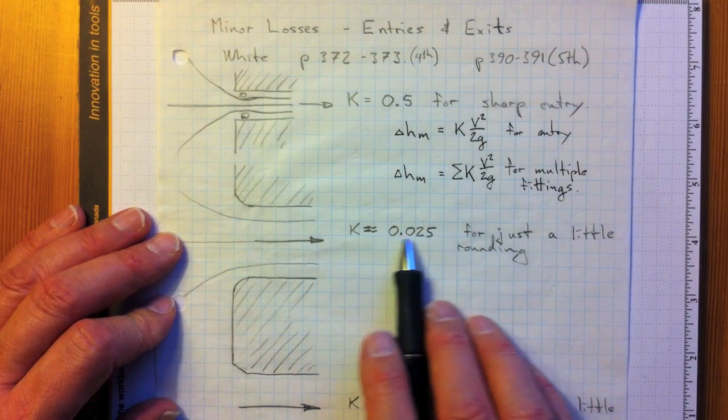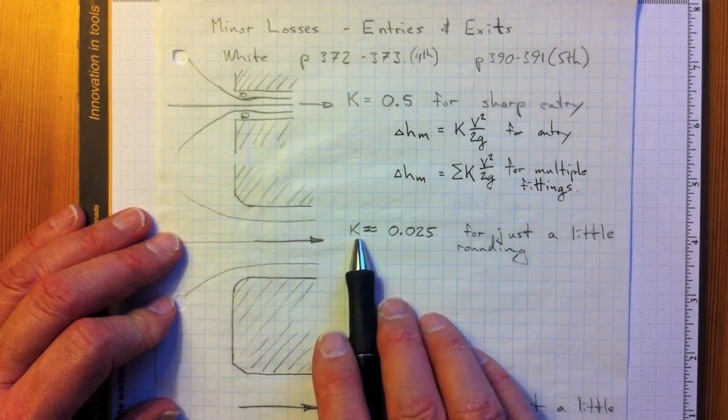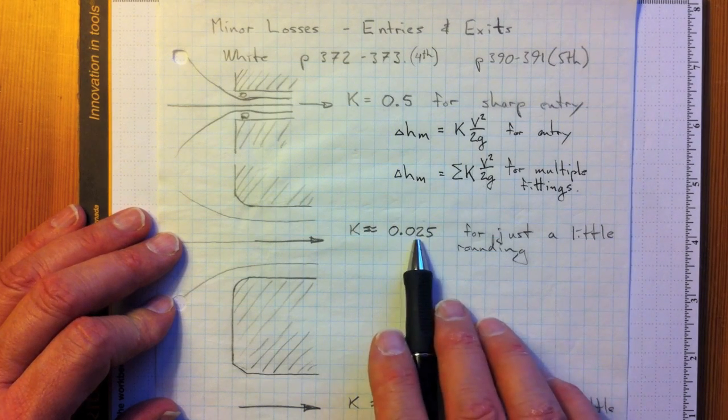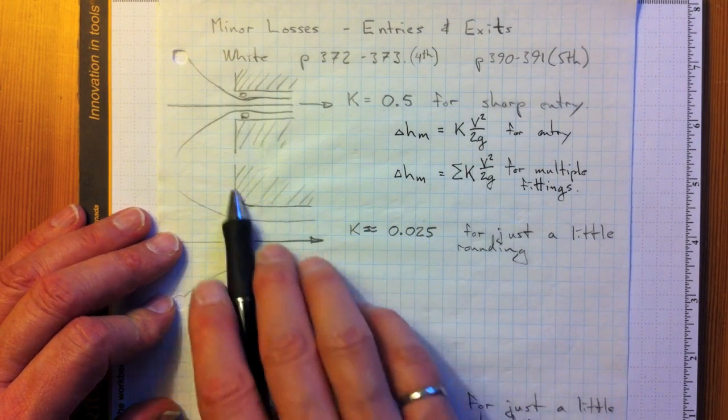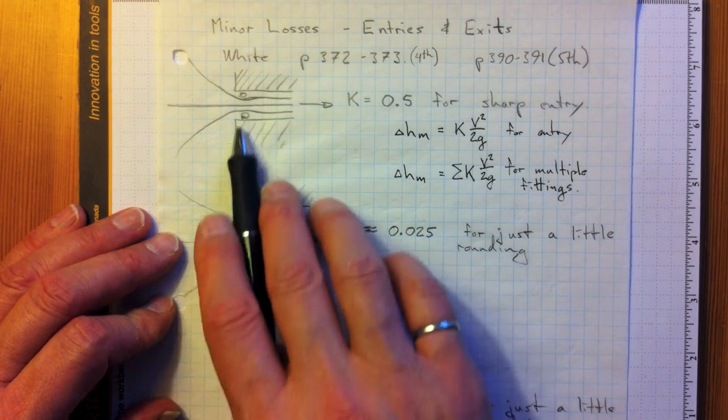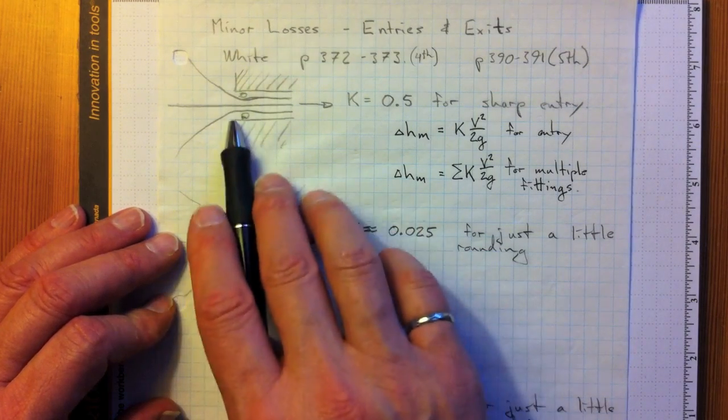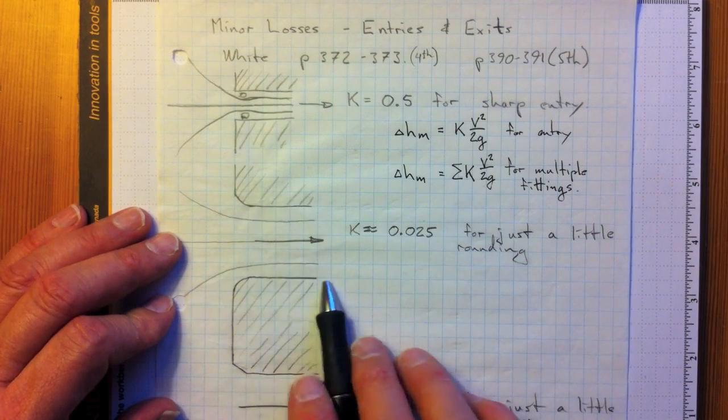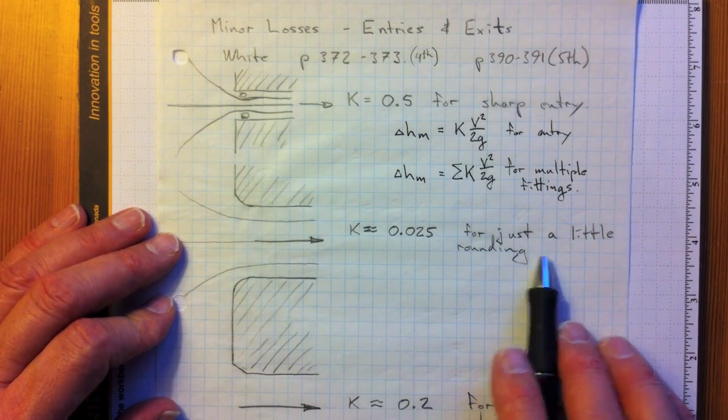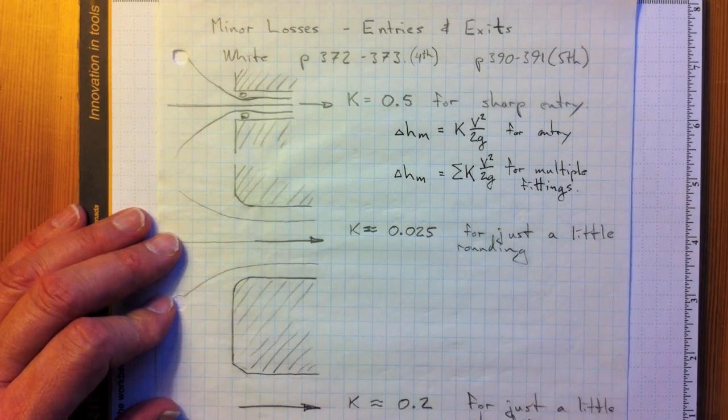Now it's amazing how much we can reduce that minor loss coefficient, get it down from about 0.5 down to about 0.025 just by putting a little bit of rounding on that entry, just by smoothing off that sharp edge just a little bit. We virtually eliminate that loss. So whenever you're designing flow systems, it's nice to get a little rounding on there.